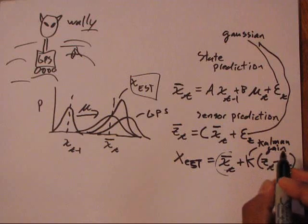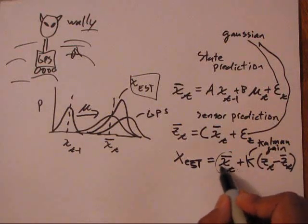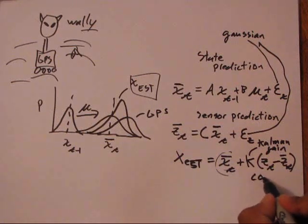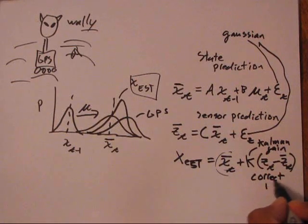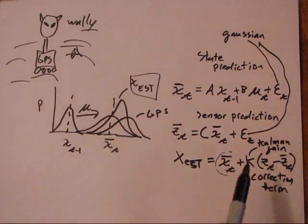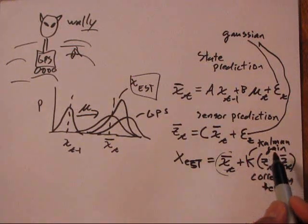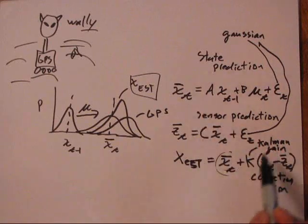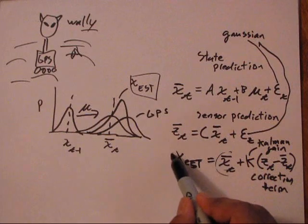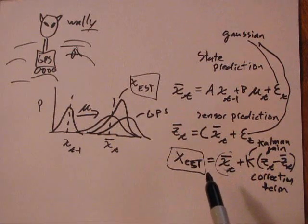And so I'll correct it by however much the Kalman gain tells me to correct this estimate here to get a final more accurate estimate. And so this is considered a correction term. But that's really the whole idea of Kalman filters, is to basically incorporate our predictions of our state and our sensor information with the real sensor information we get to get a more accurate estimate of where we're at.